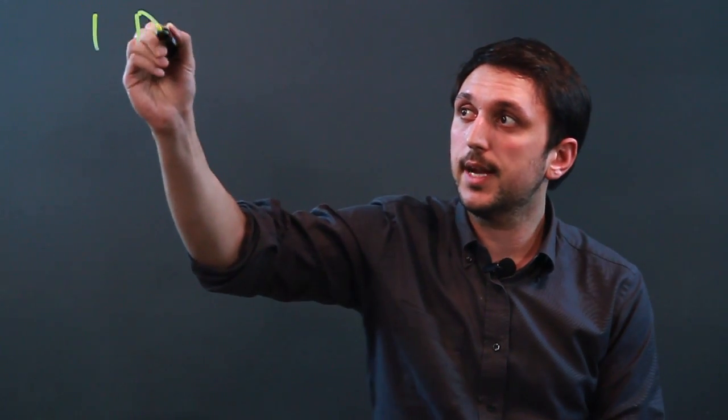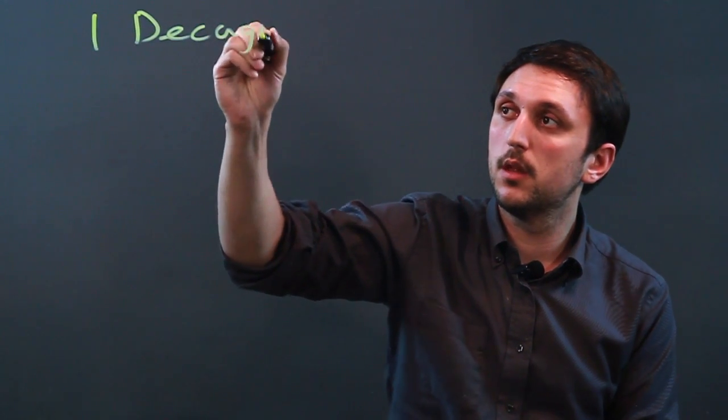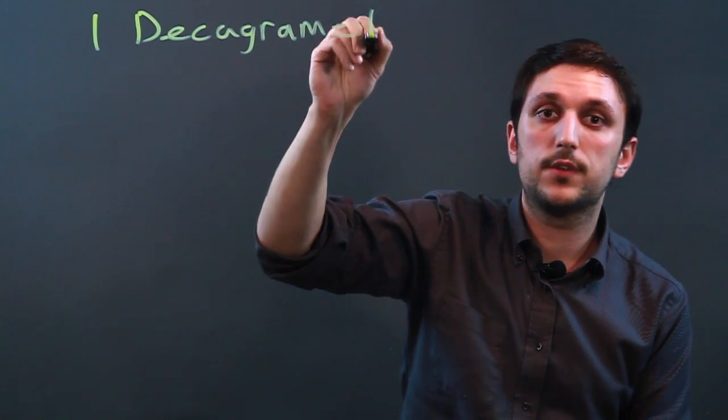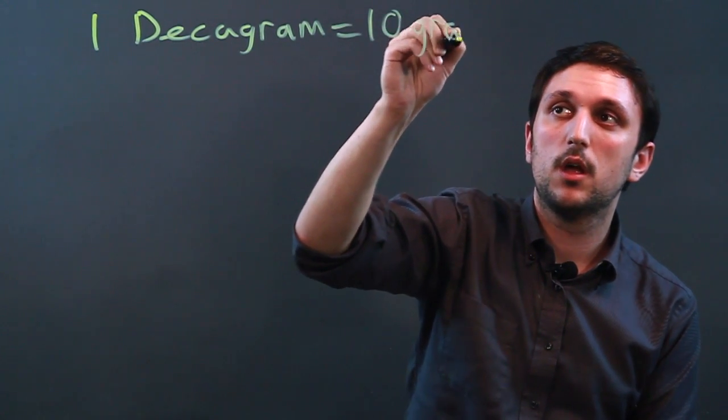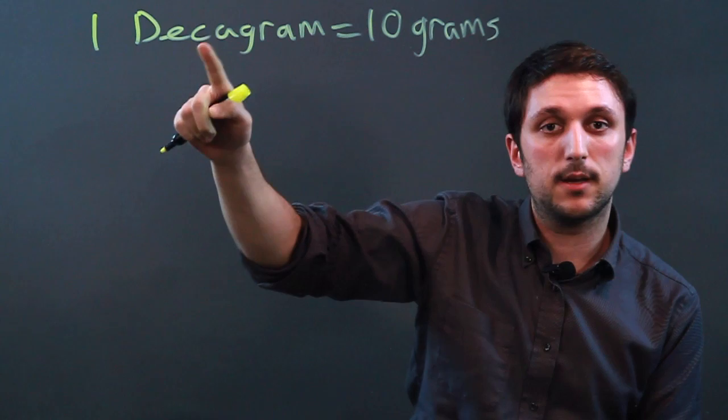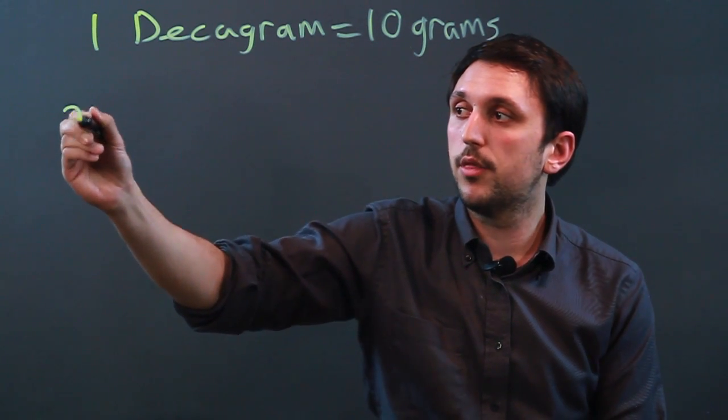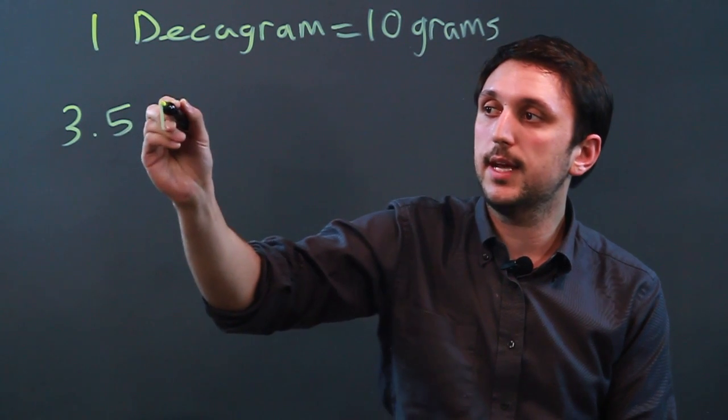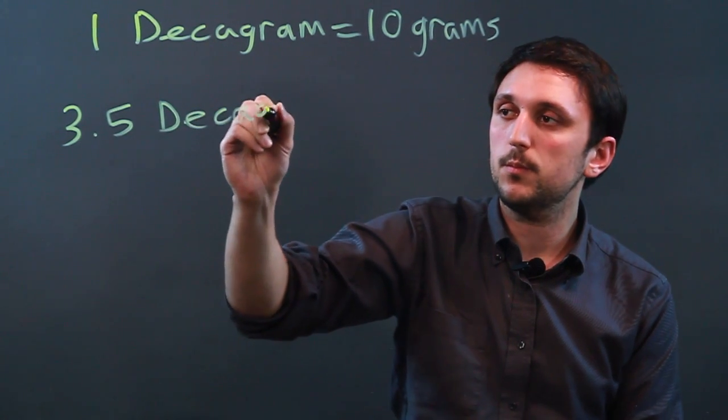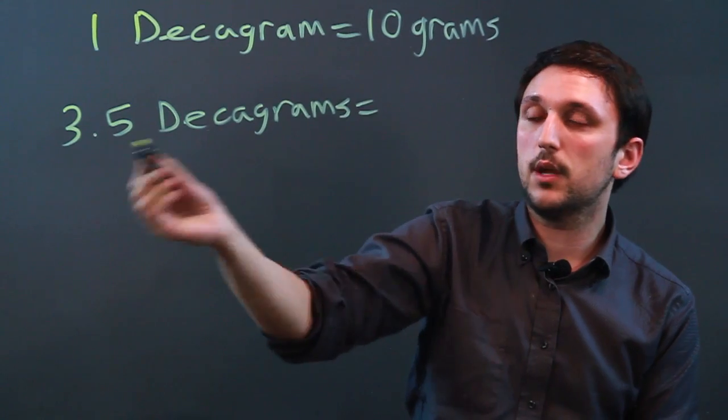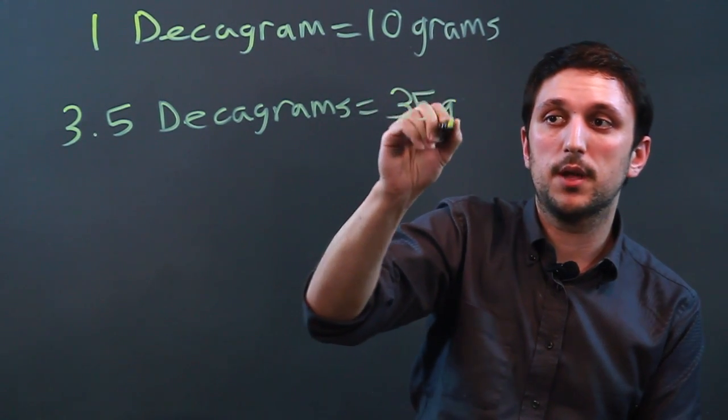Well, first, one decagram equals 10 grams. The prefix deca means 10. So that means if we have, say, 3.5 decagrams, that's going to equal 35 grams.